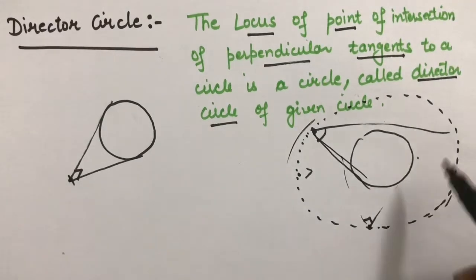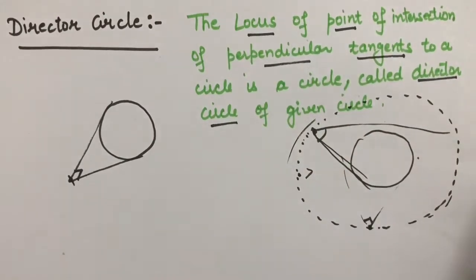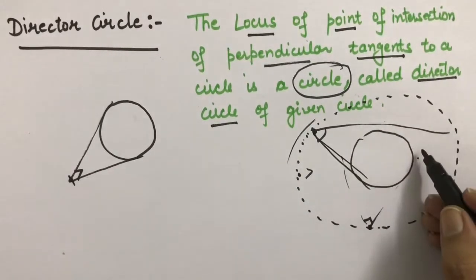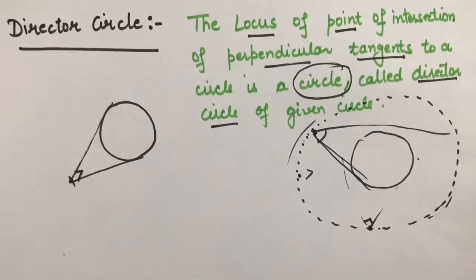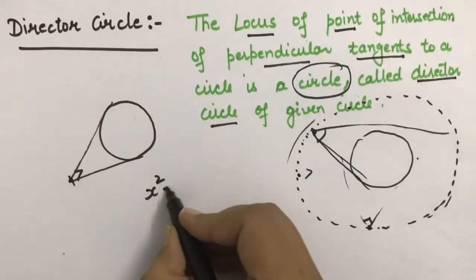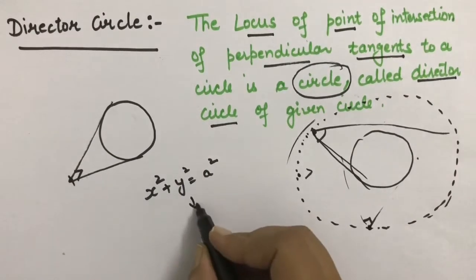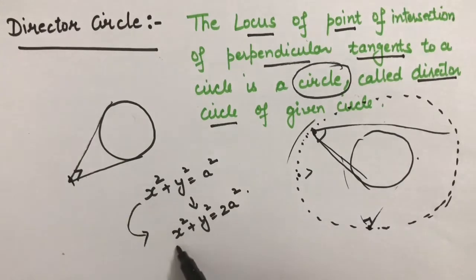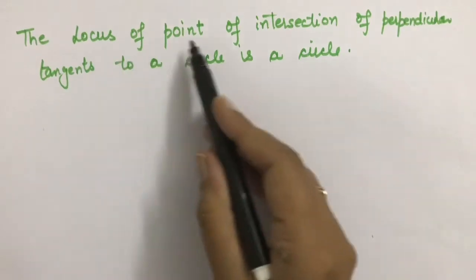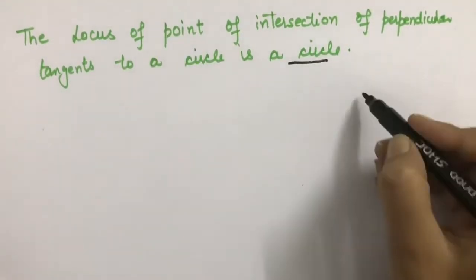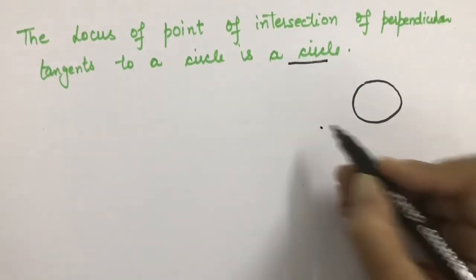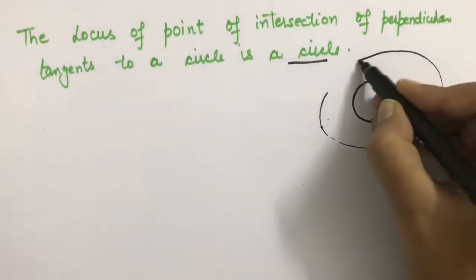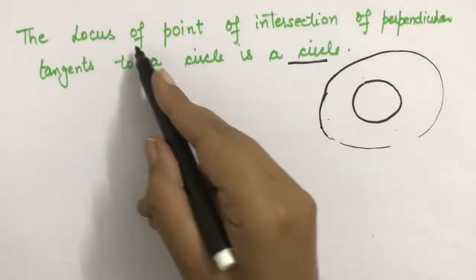Director circle is the locus of points of intersection of perpendicular tangents to a circle. Let's prove that the locus of points of intersection of perpendicular tangents to a circle is itself a circle. If I have a point of intersection of perpendicular tangents and I collect these points, we will get a circle. So we have to prove this.